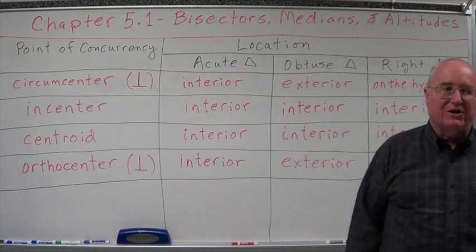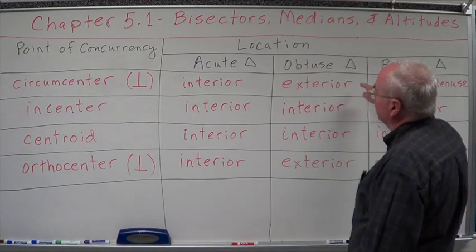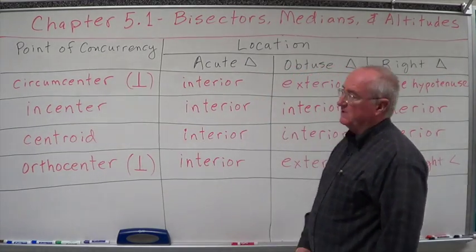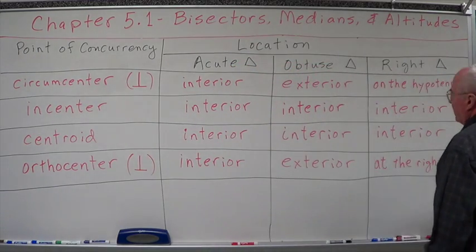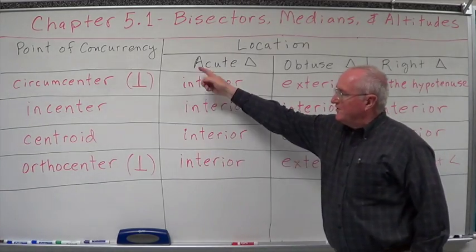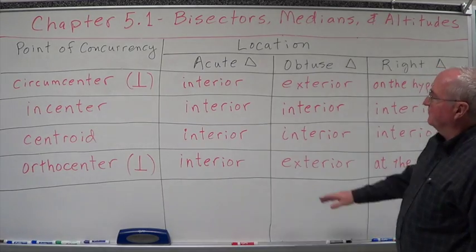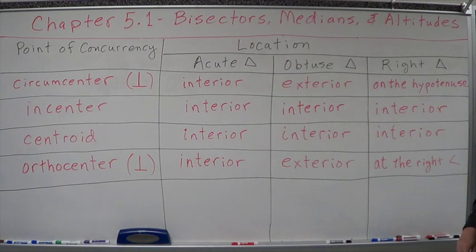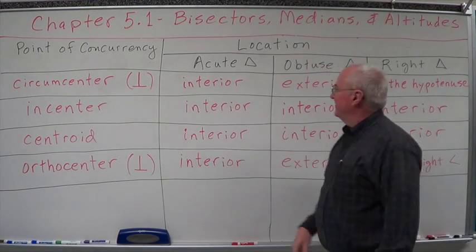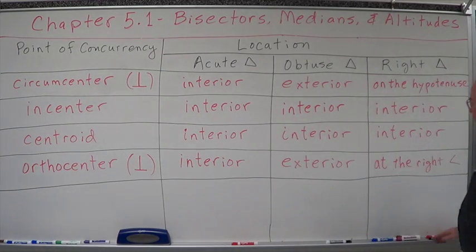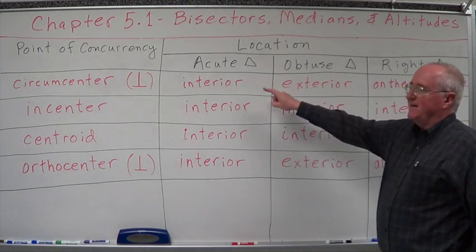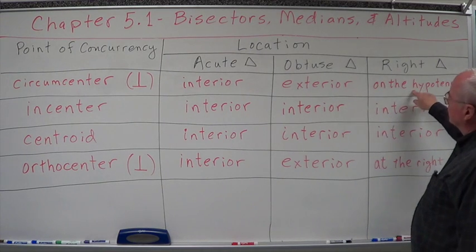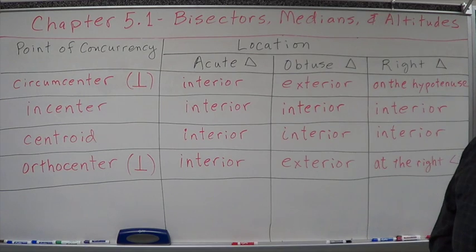You'll notice that for an acute triangle, everything is interior. For an obtuse triangle, anything that has to do with something perpendicular is exterior. The incenter and centroid are interior all along. The things that are perpendicular act differently: interior on the acute, exterior on obtuse, and on a right triangle they're opposite — the circumcenter is on the hypotenuse, and the orthocenter is at the right angle.